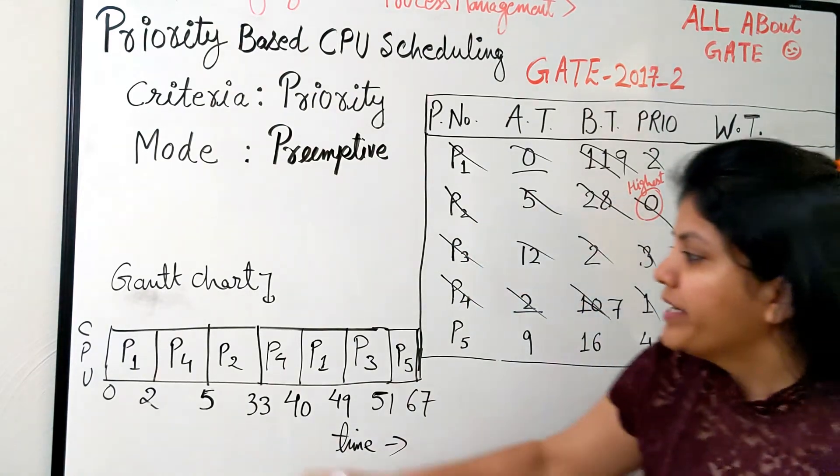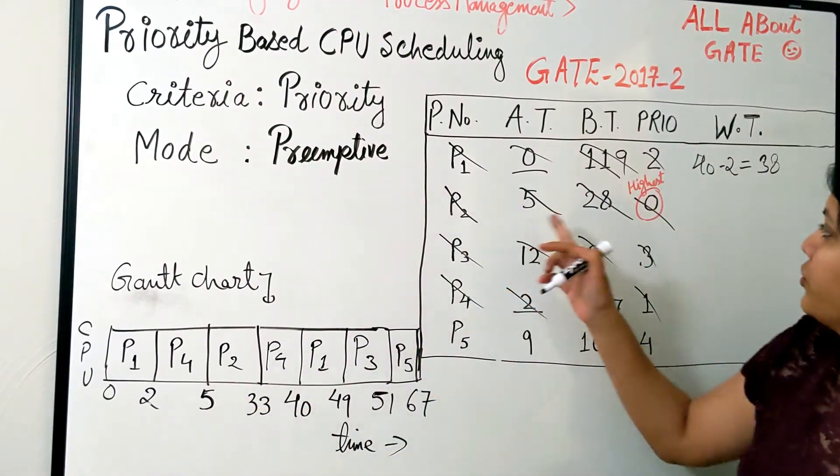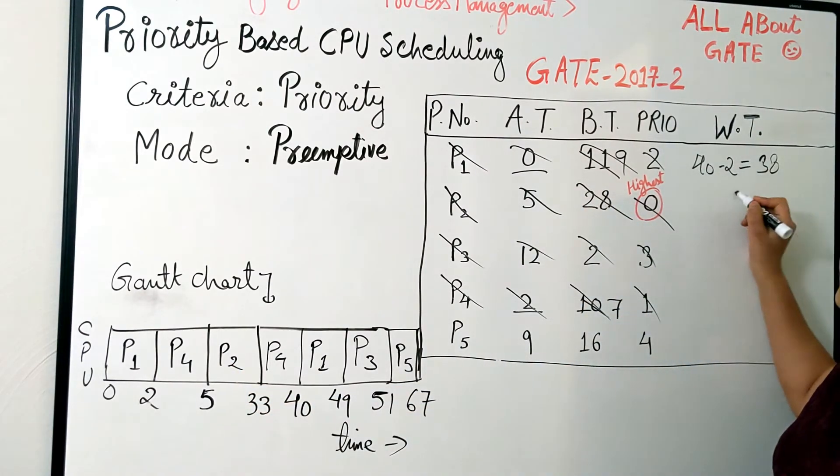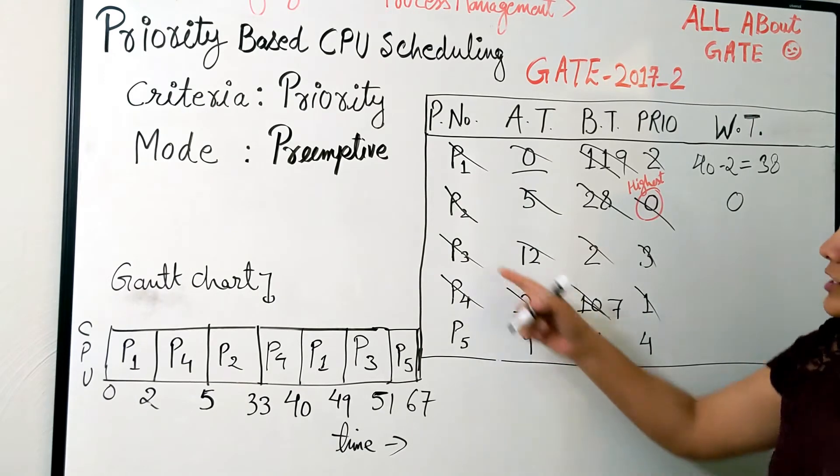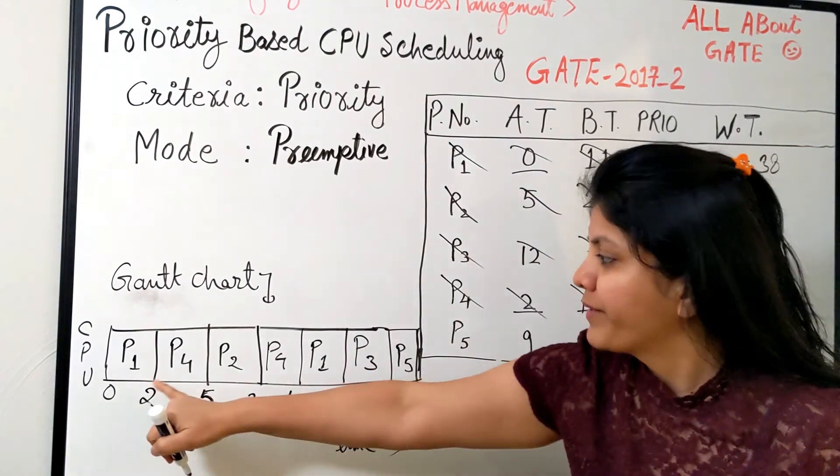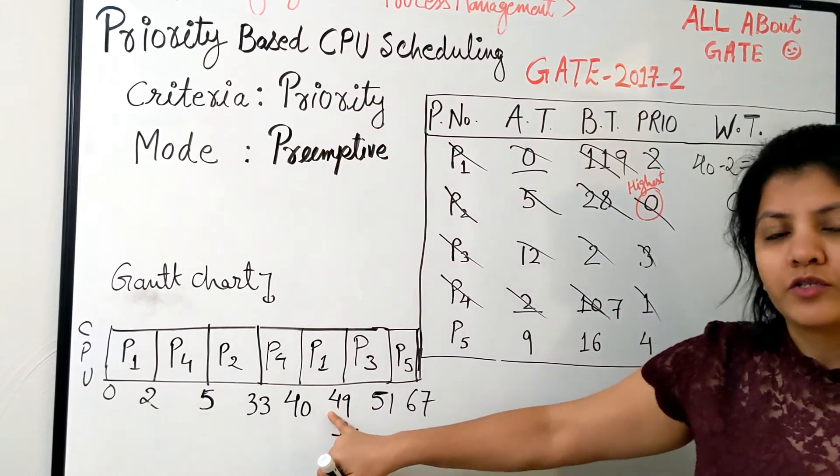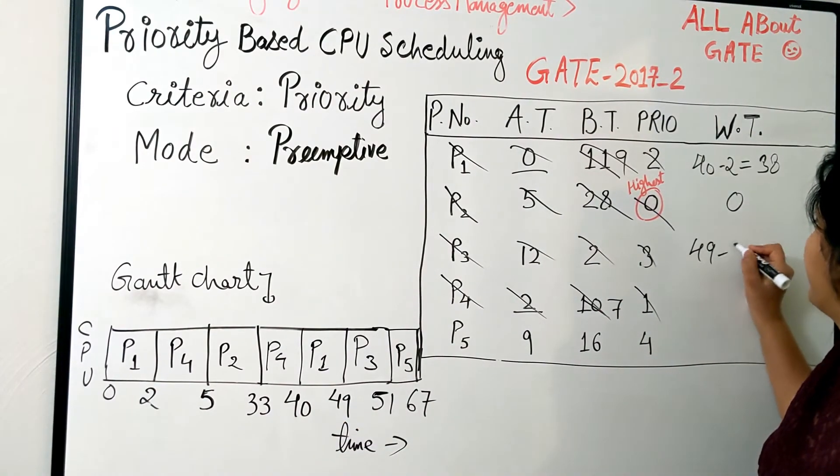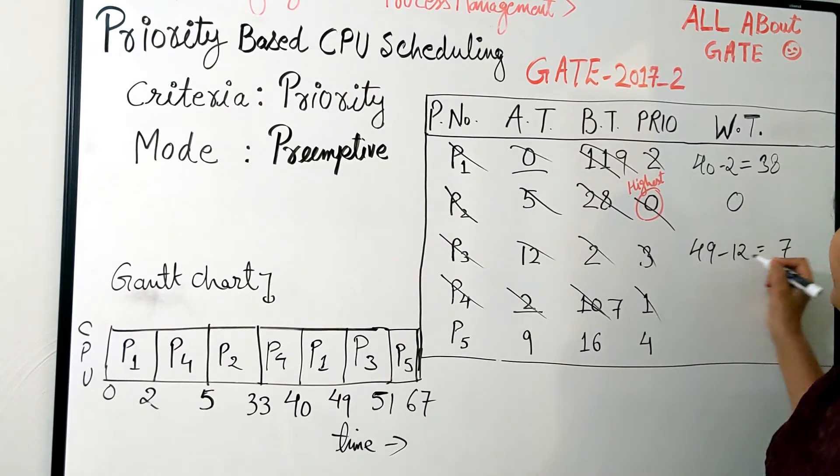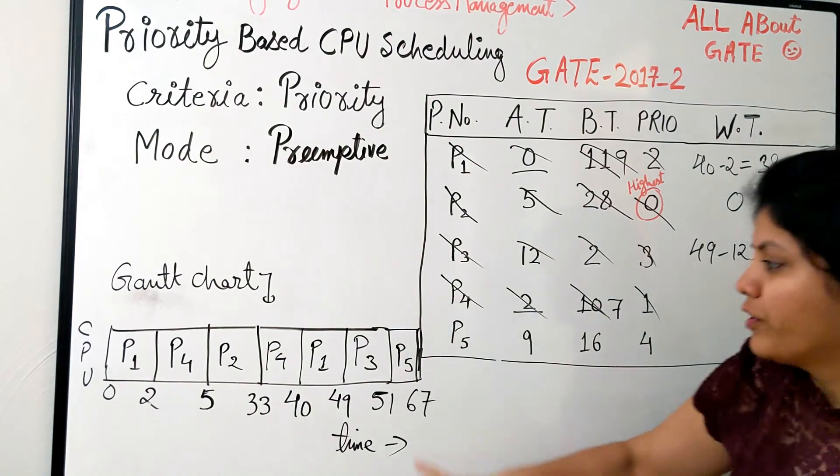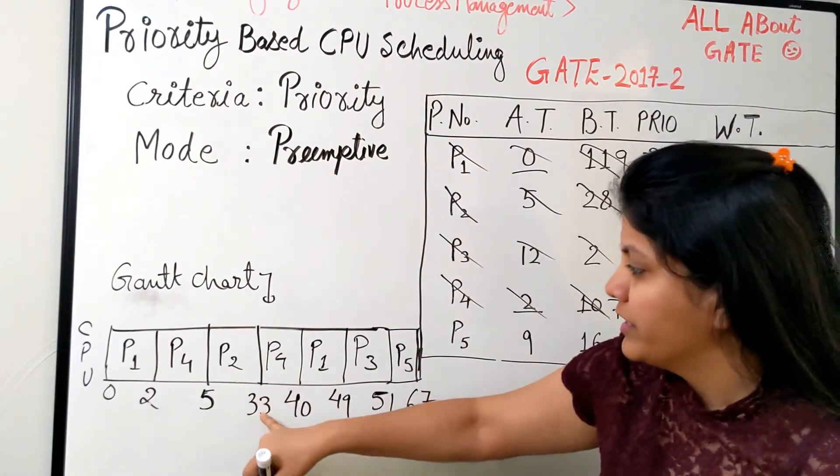P2 comes at 5 and was immediately scheduled right there for the complete length, no waiting at all, so it becomes zero. P3 came at 12, got scheduled at 49, so 49 minus 12, that is 37.